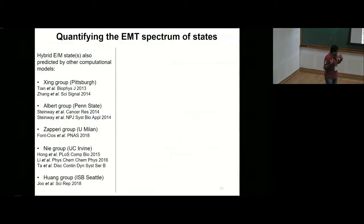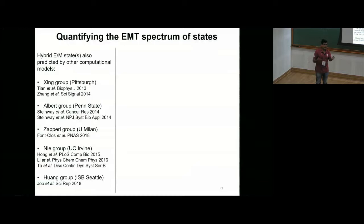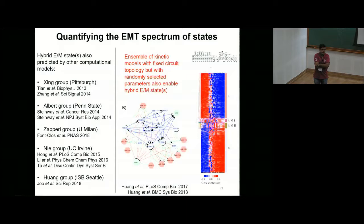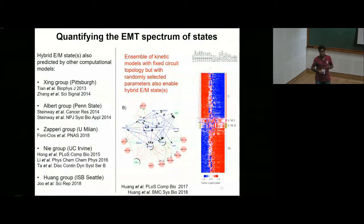Once we started modeling EMT there has been a surge of people modeling it, using all different types of methods and networks. The general prediction common across all those models is that EMT is not binary — there are one or more intermediate states. Depending on the network each model has a different molecular signature for the hybrid state, and we still need convergence on that. But the one thing we have converged on is that EMT is not a binary state. What the student Kishore, together with summer students Burhan and Vishnu, are working on now is looking at all these networks, modeling them using different frameworks, and asking whether there is something specific about the topology itself that we can identify.